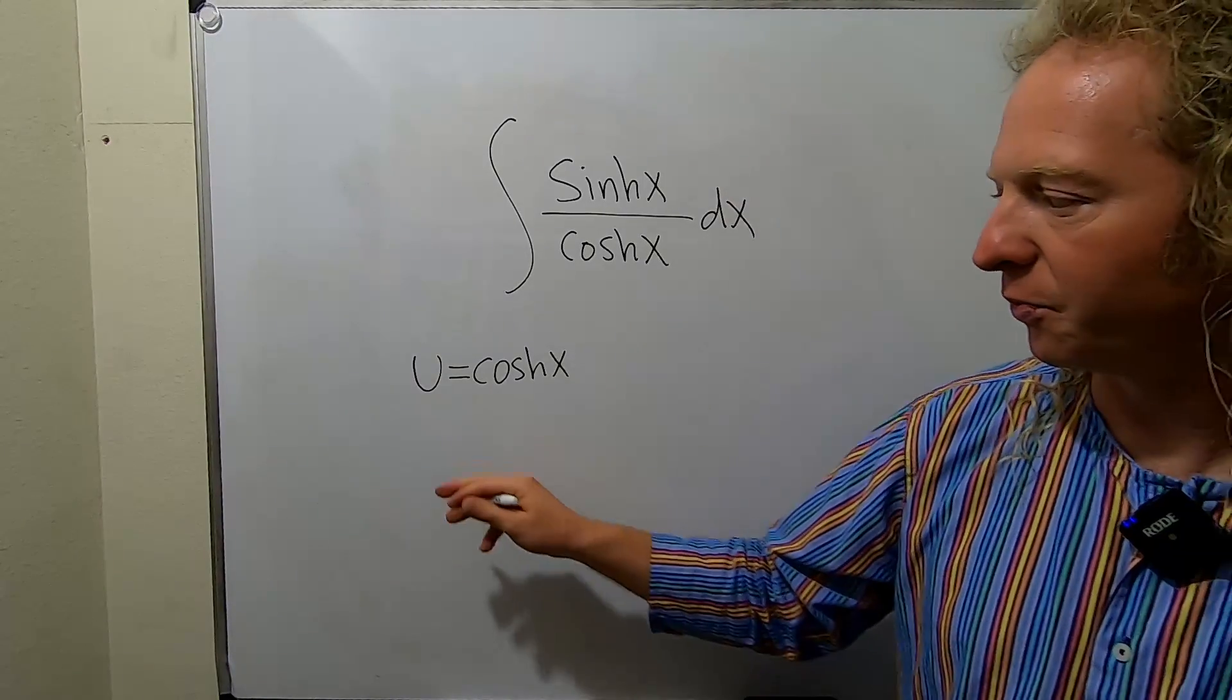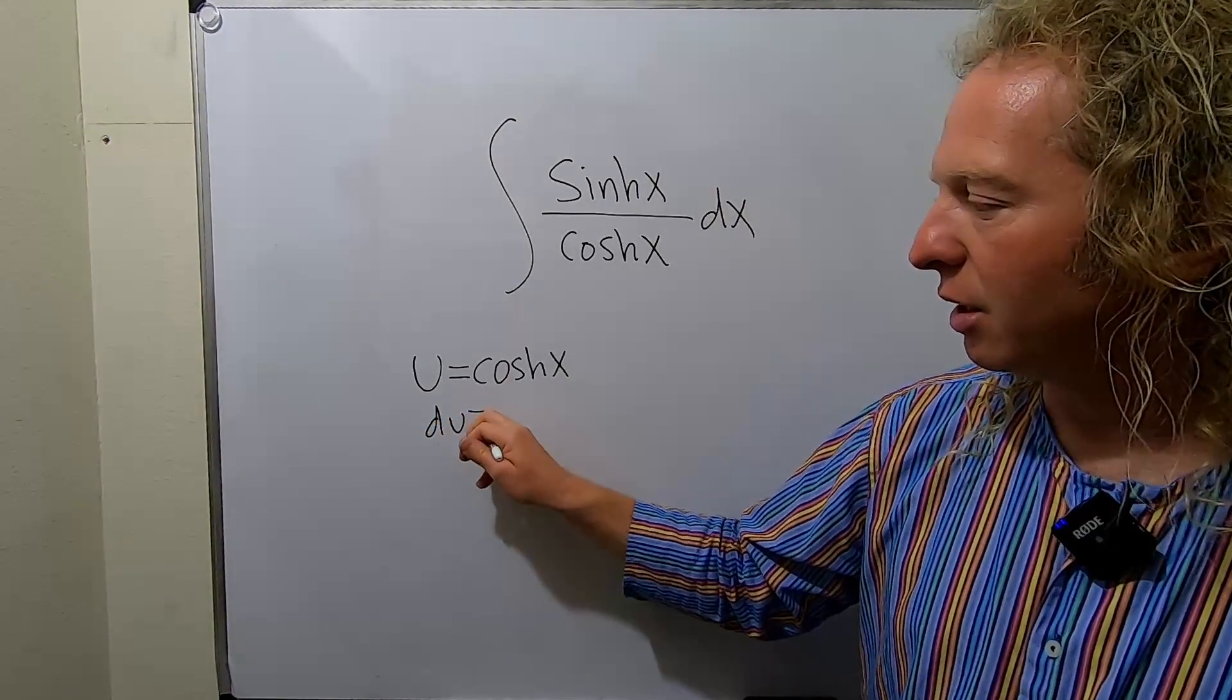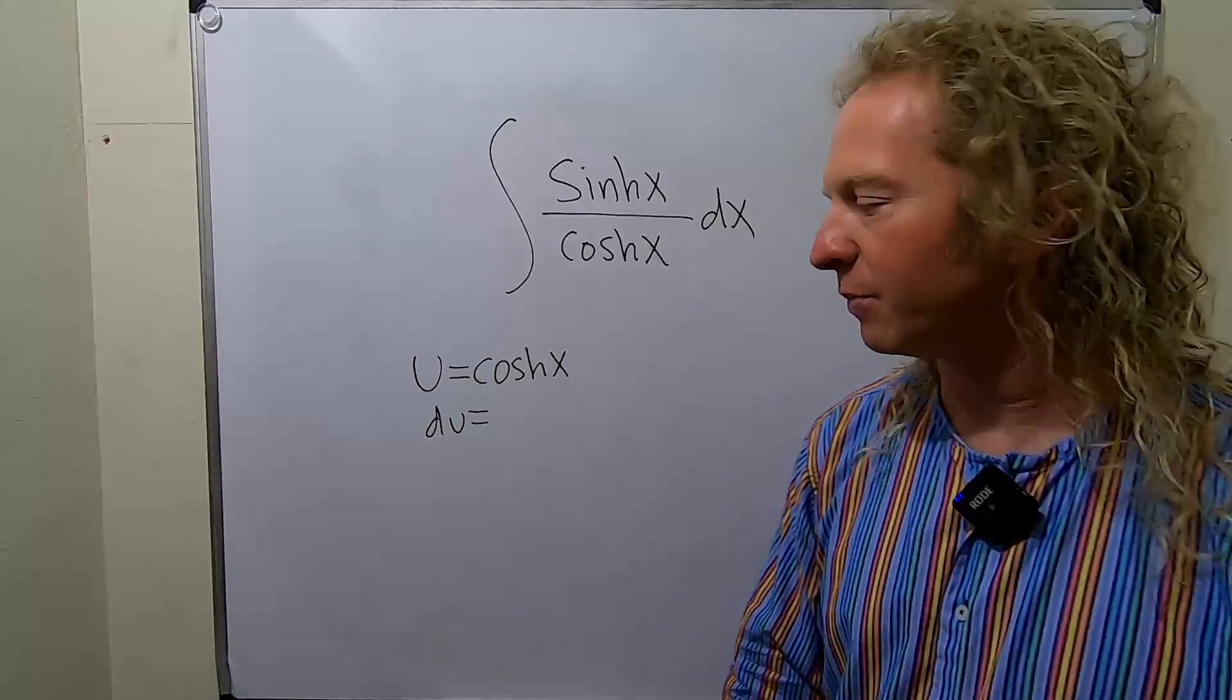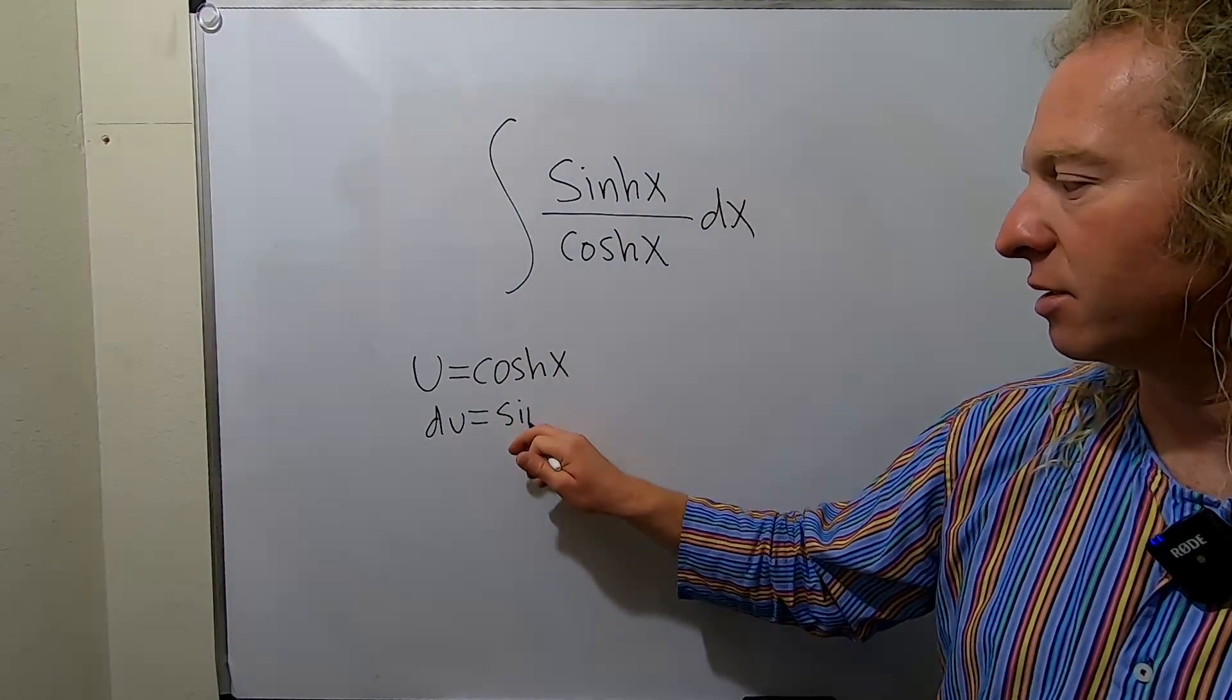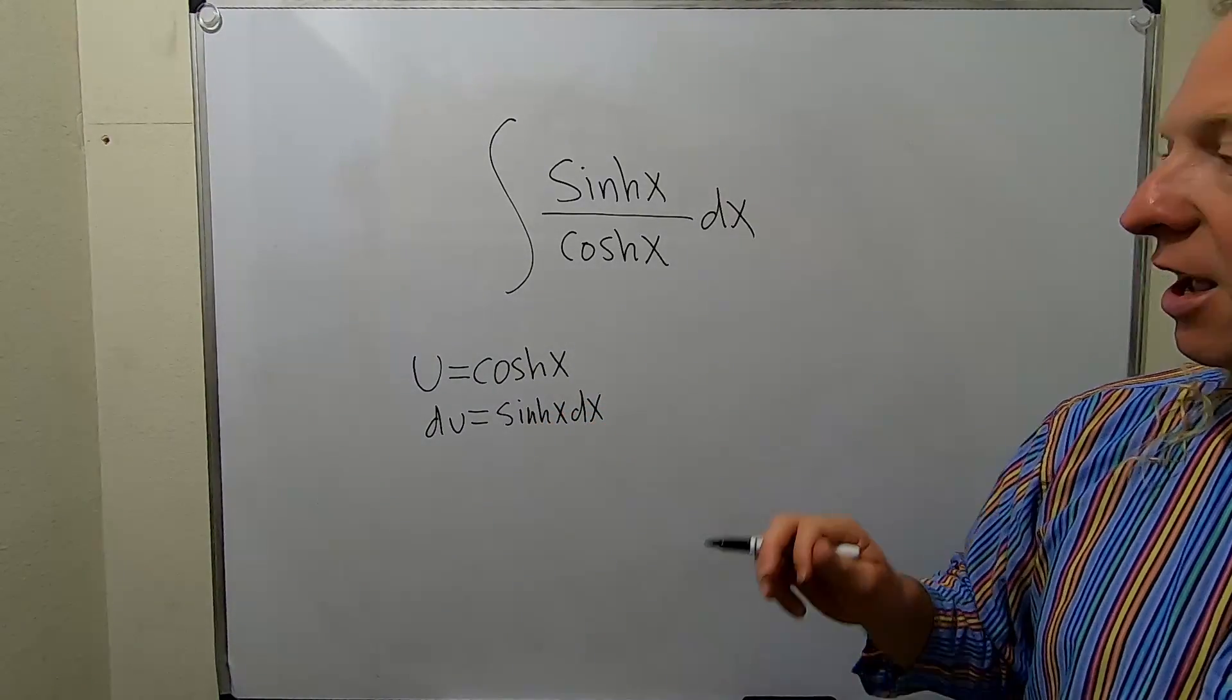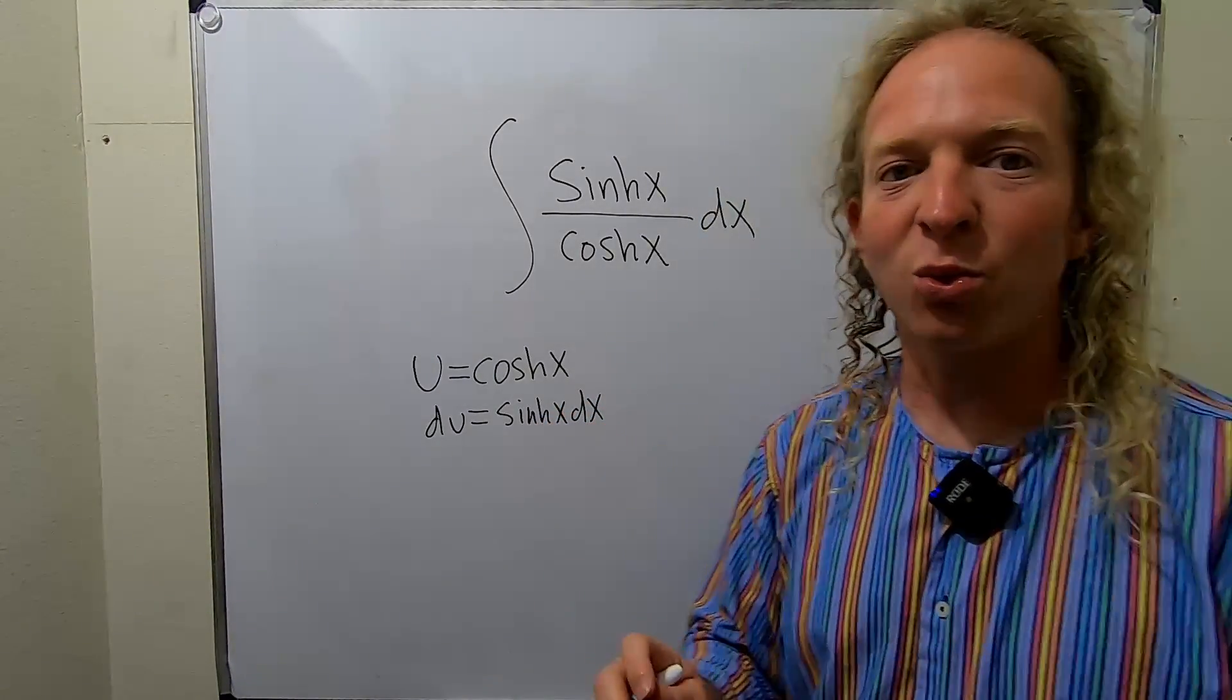Then we'll compute du. The derivative of cosh x is sinh, so this is sinh x dx. Beautiful stuff. I love this problem because it just works out perfectly.